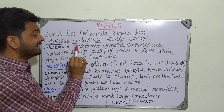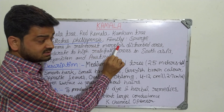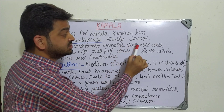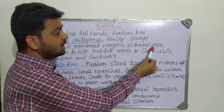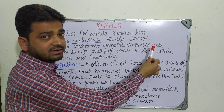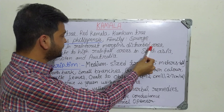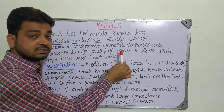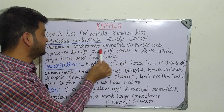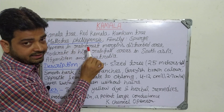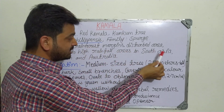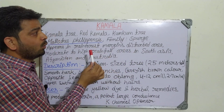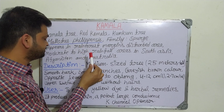It appears in rainforest margins. The locality where it can grow includes disturbed areas — land that is unused or where nobody is going — and moderate to high rainfall areas, not low rainfall. Geographically it is found in South Asia, Afghanistan, and Australia.